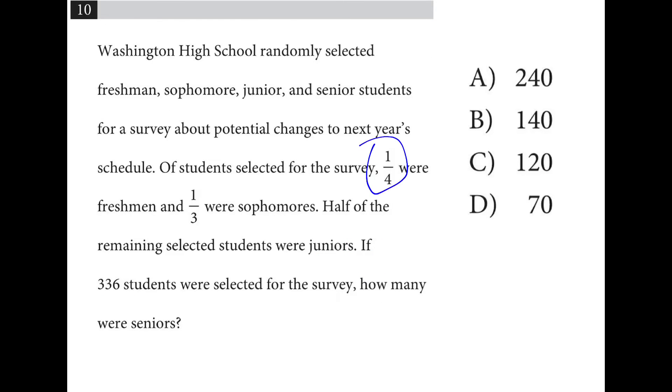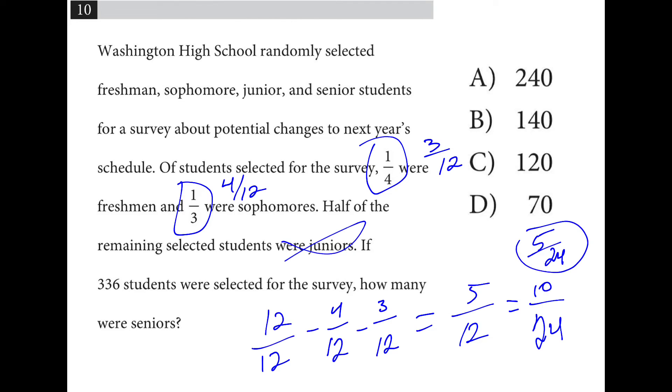One fourth were freshmen, one third were sophomores. Let's convert to a common unit and call this 3 twelfths, and let's call this 4 twelfths. So out of the 12 twelfths, we subtract 4, and we subtract 3, and what was left, 5 twelfths. Half of the remaining were juniors. So if we bump this up to 10 over 24, then 5 over 24 were juniors, and the other 5 over 24 were seniors. We can multiply that fraction, 5 over 24, times 336, and we get 70.